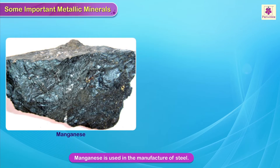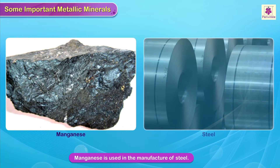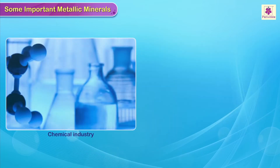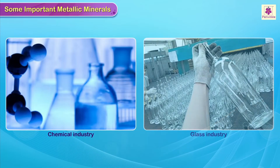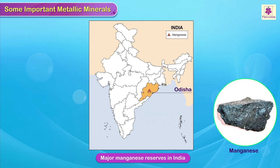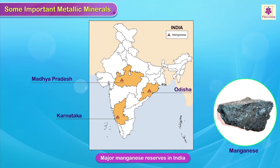Manganese is used in the manufacture of steel. It is also used in the chemicals and glass industries. India has many deposits of manganese in Odisha, Karnataka, Madhya Pradesh, Goa and Maharashtra.